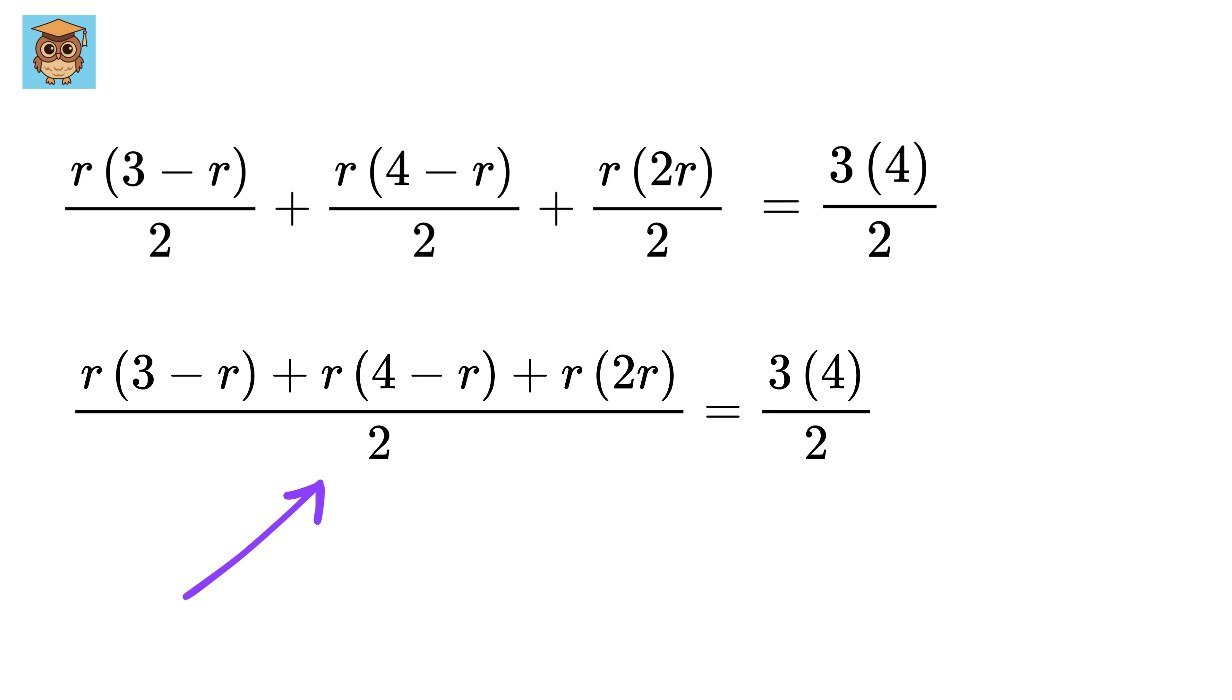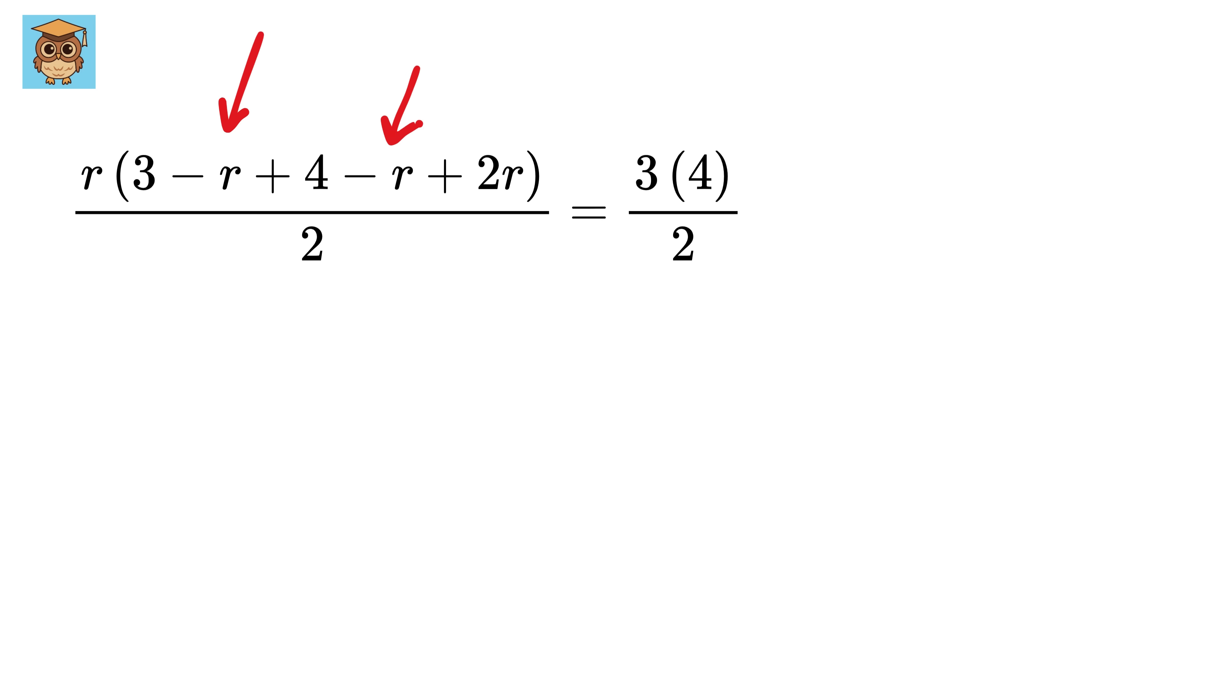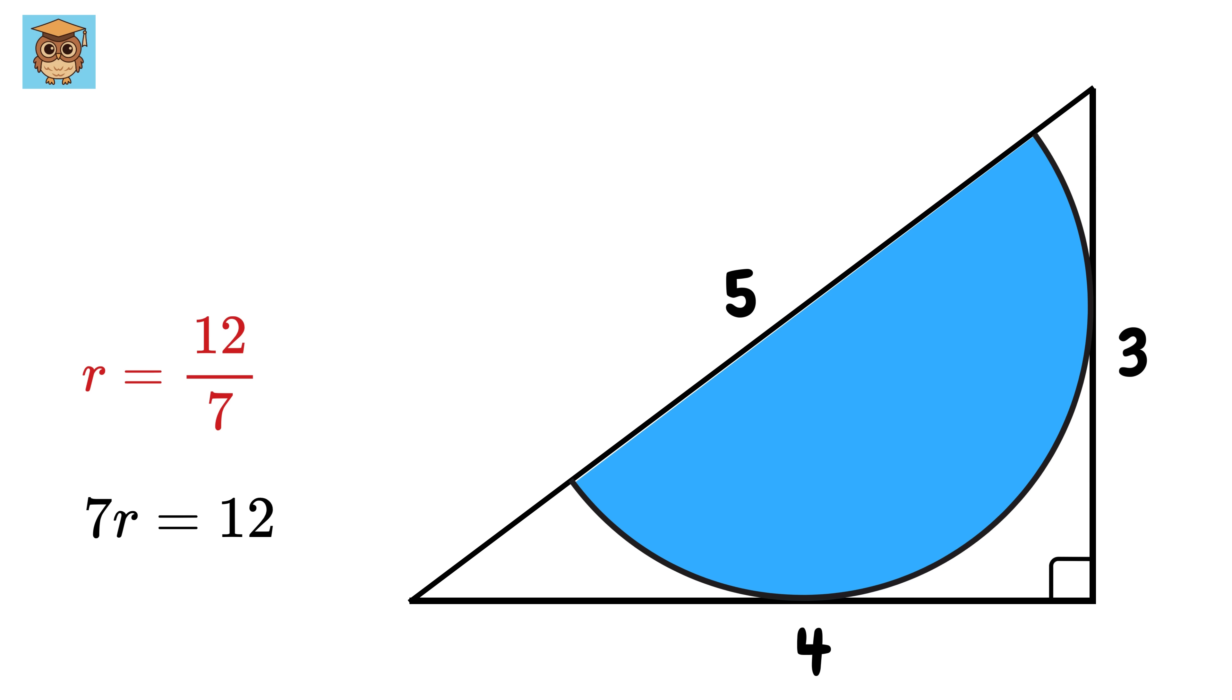Now write 2 as a common denominator like this. Also, take r as common from the numerator, and this will become r times (3 minus r plus 4 minus r plus 2r). Oh, look again! Both these negative r terms and this 2r will cancel each other, and we will be left with r times—this will become 7. Also, cancel 2 from both these sides to get 7r equals 12, or r equals 12 over 7. And that's it!